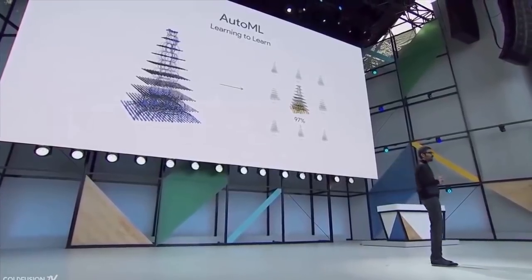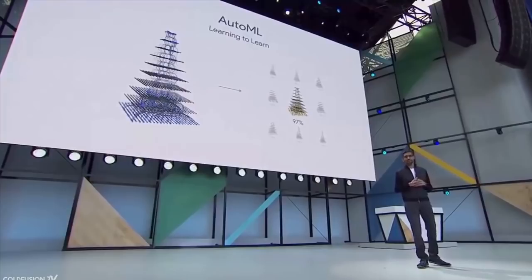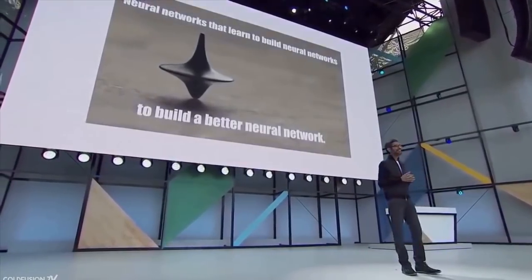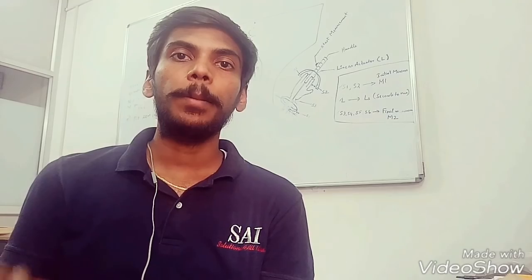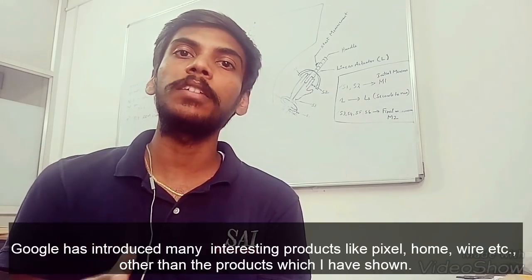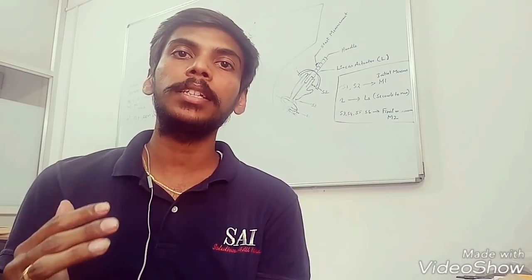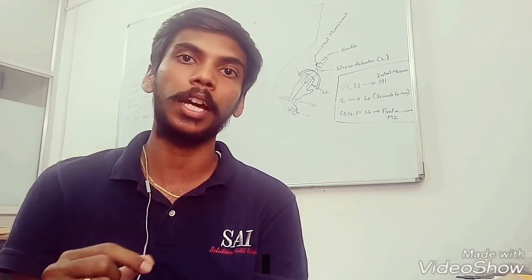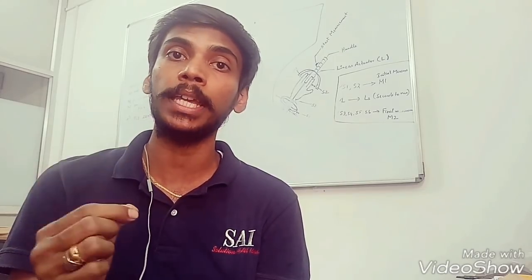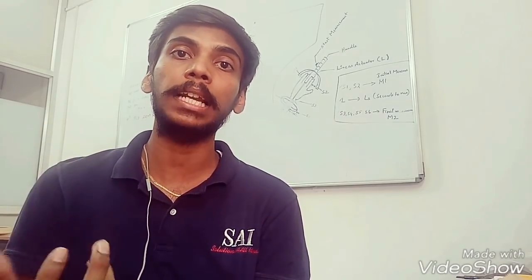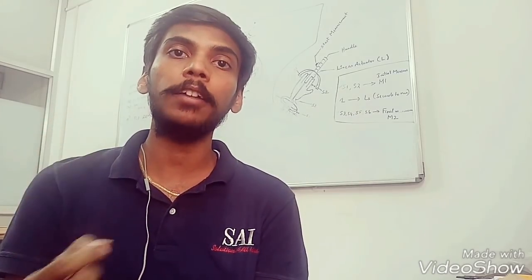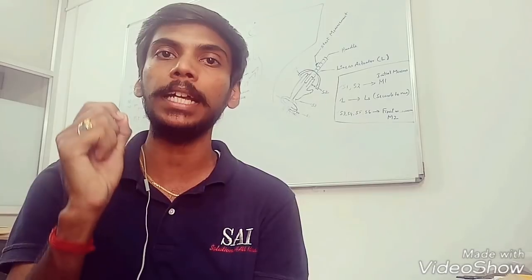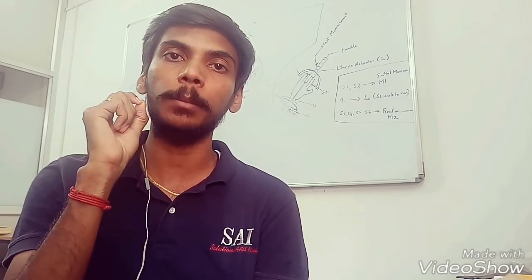Whenever Sundar Pichai spends time with the team and thinks about neural nets building their own neural nets, it reminds him of his favorite movie, Inception, and he says, 'We must go deeper.' So, when we look at the products, there are a lot of different products. It's interesting that Google has created many different products. Now, they have a lot of competitions, but they are able to survive through creativity and innovation. Products include Google Wire, Google Wi-Fi, Google Home, and Google Pixel. These algorithms are unique and innovative.